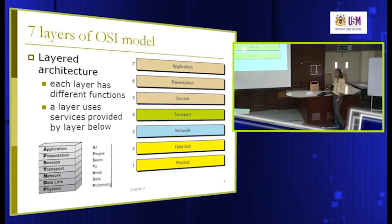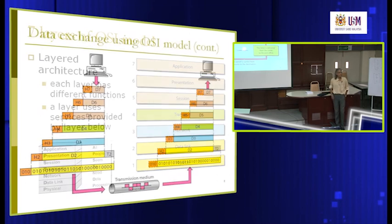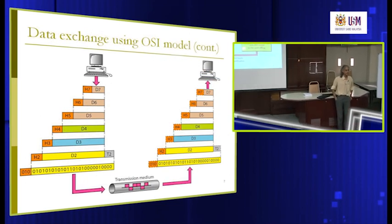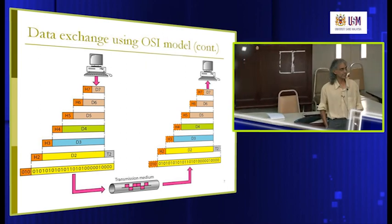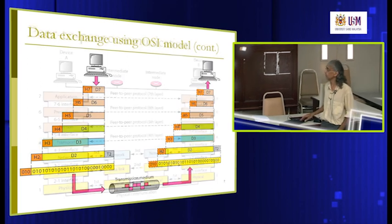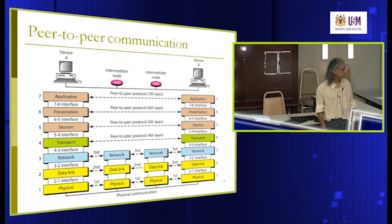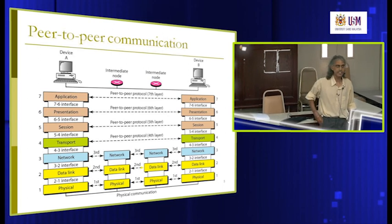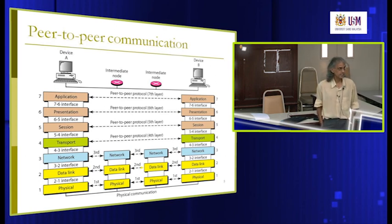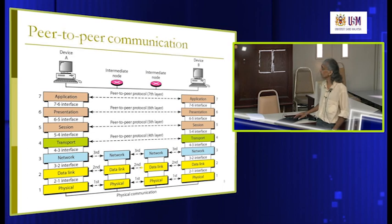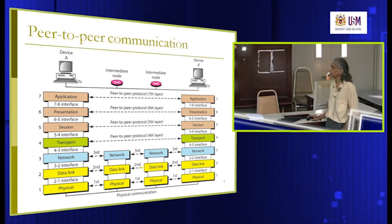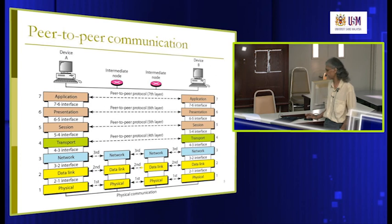From sender to receiver there are multiple layers involved — different people, different organizations, different techniques. The same way, when one machine sends data to another machine via network cable, it also goes through the same process. There are seven layers which act as a model for data transmission, and each layer has a different function and provides separate services.